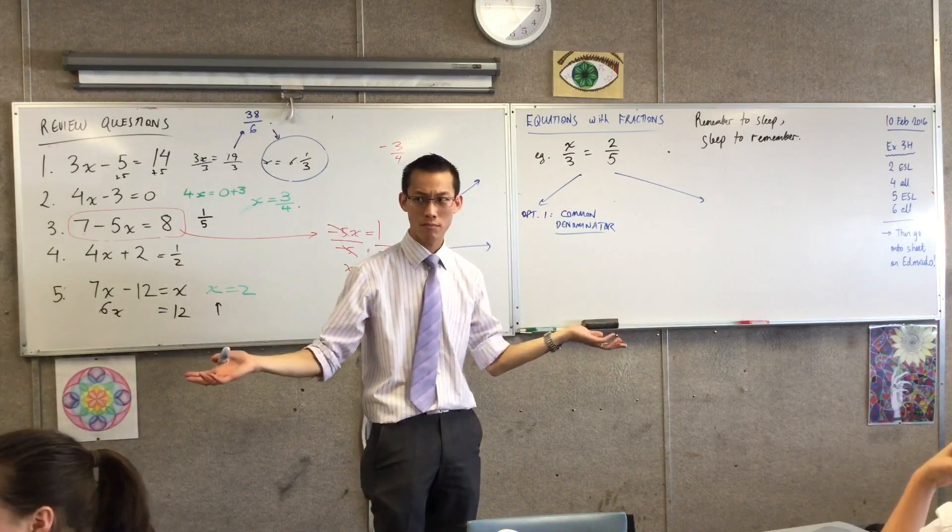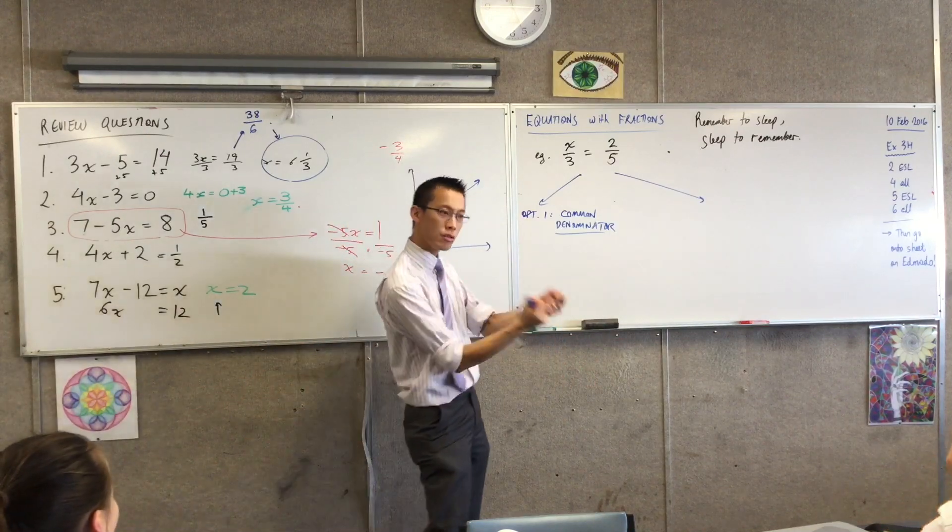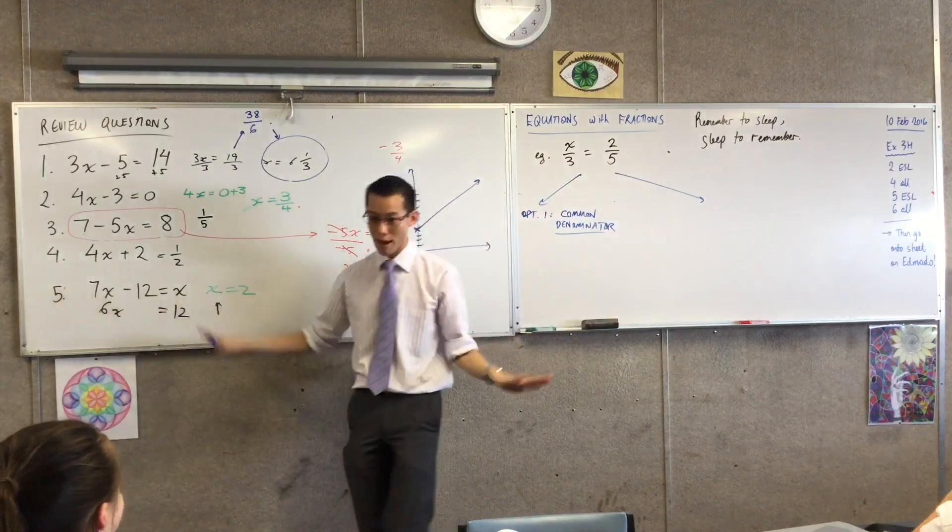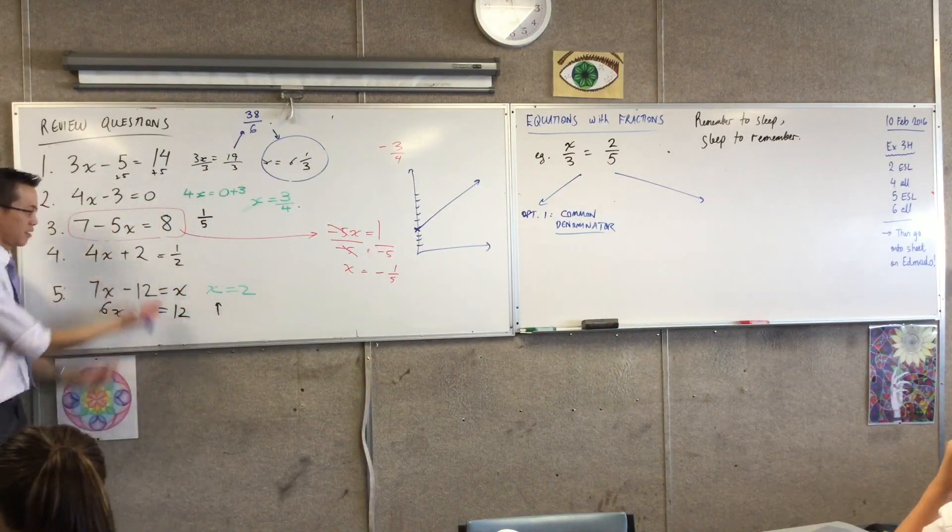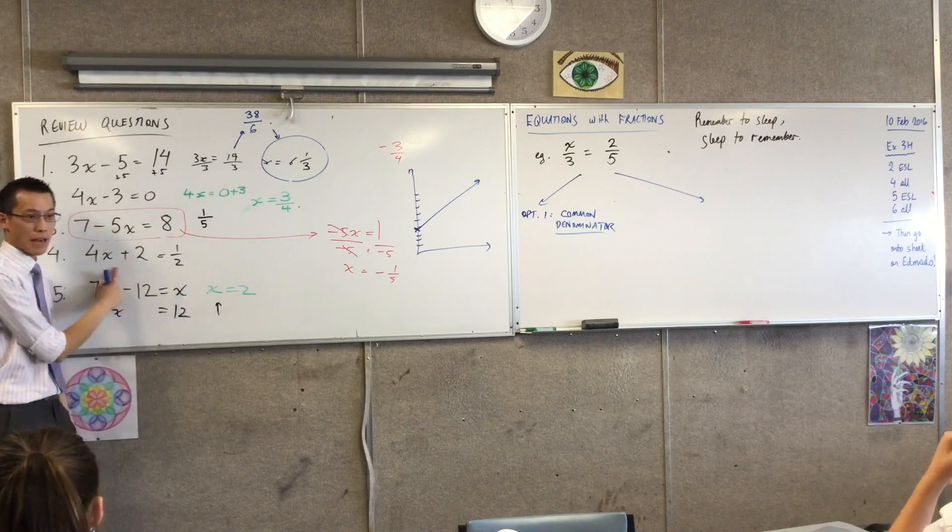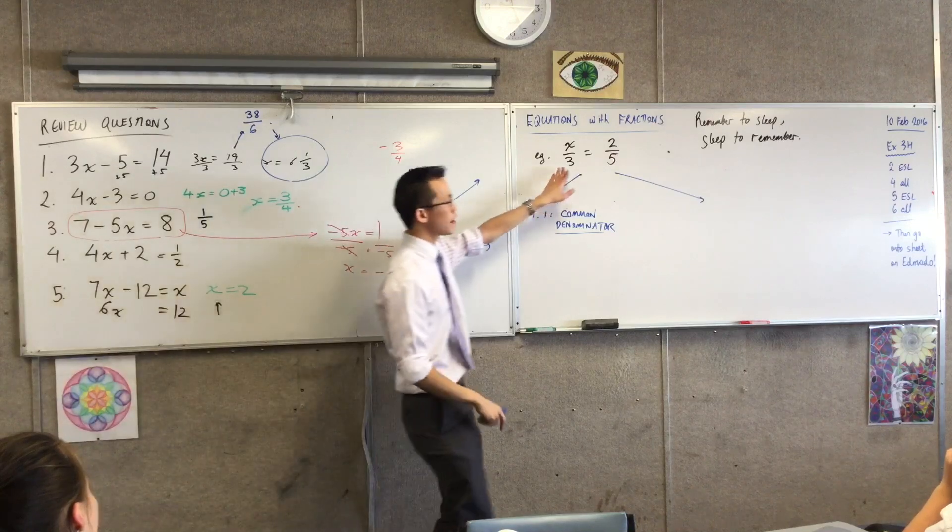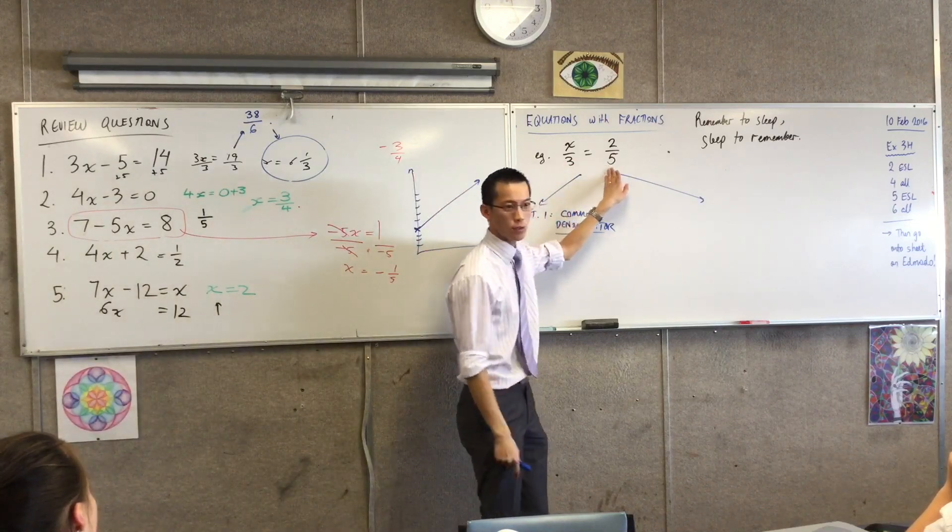That's why we multiply by two, make sense? But here, if I multiply by three or five, you'll only get rid of one of them and I want to get rid of everything. In other words, what I want is the common denominator.